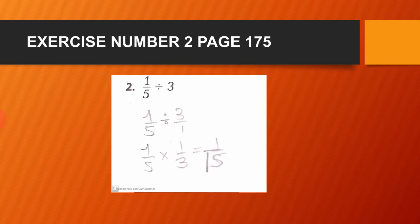Exercise number 2, page 175. We have 1 over 5 divided by 3. We write the 3 as a fraction, so it becomes 1 over 5 divided by 3 over 1. Then we use the rule: keep, change, flip.